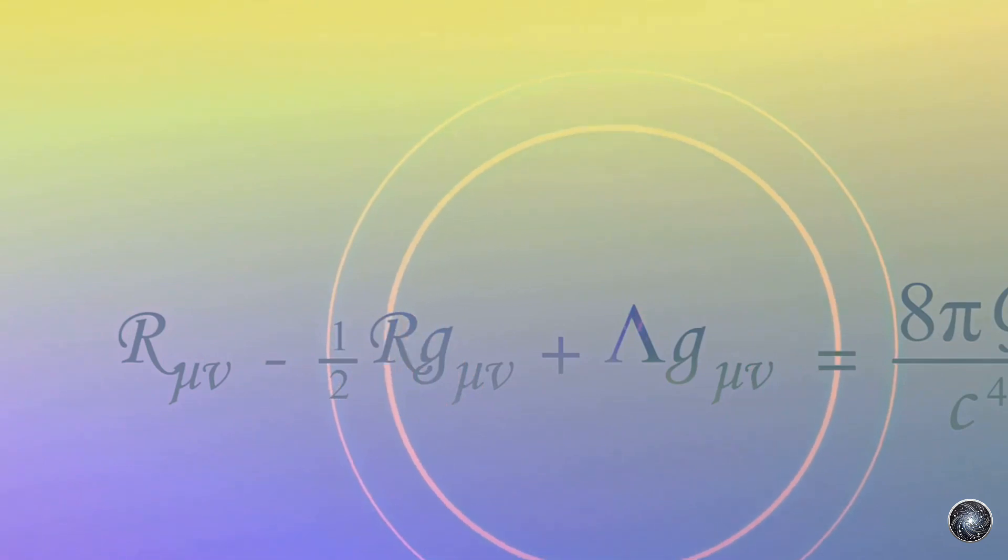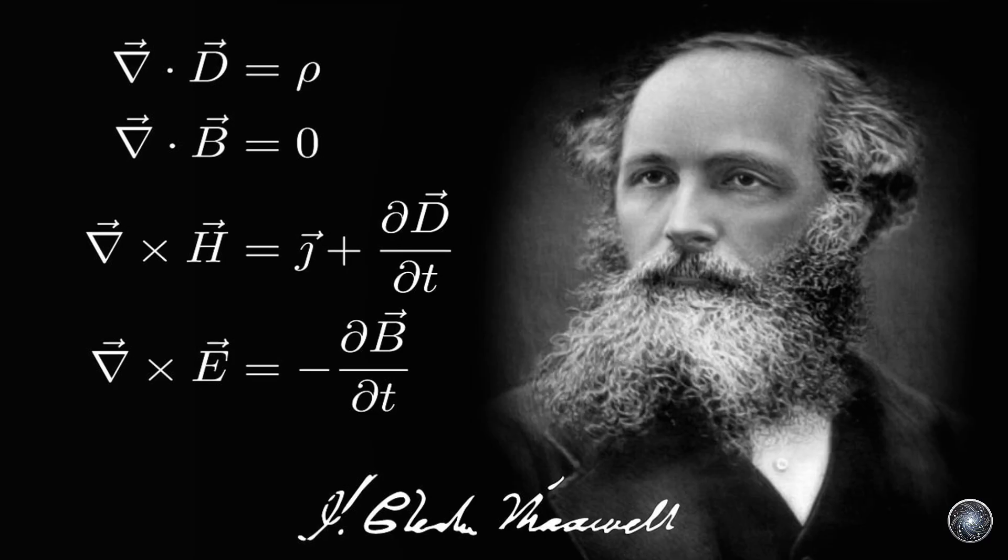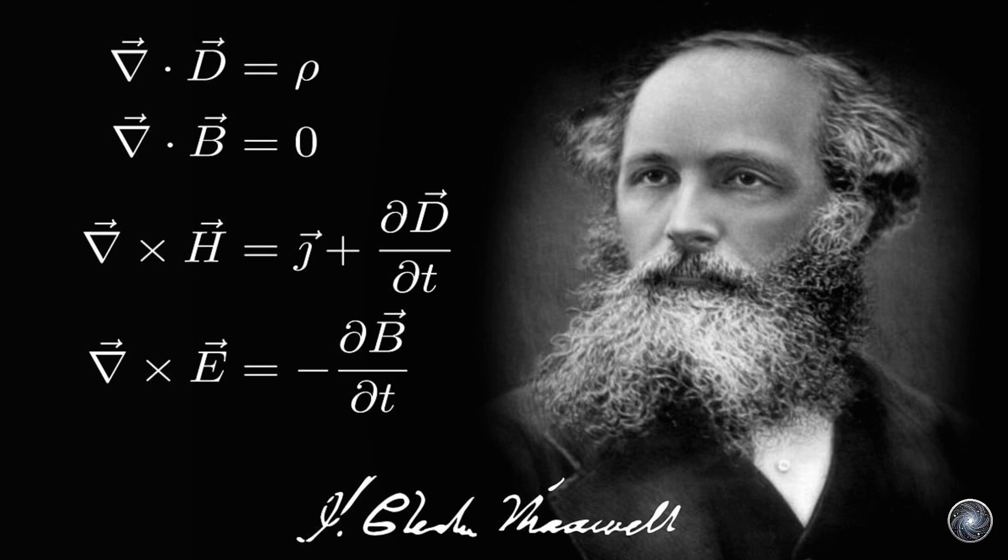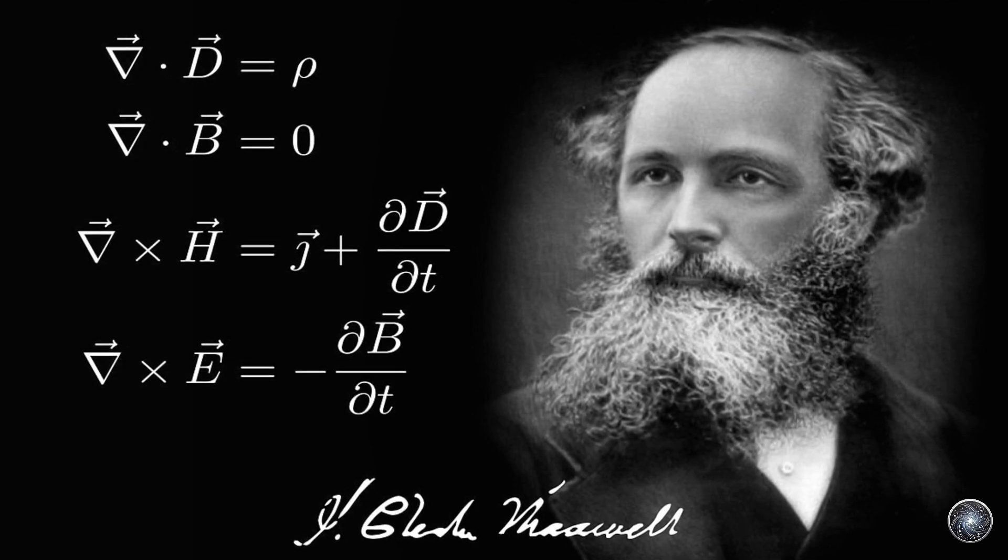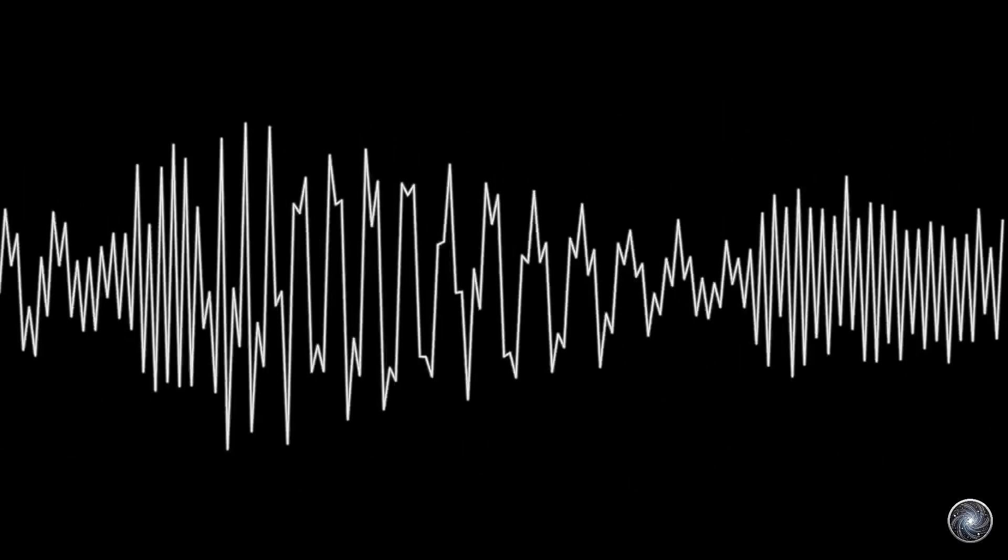From Maxwell to Einstein. James Clerk Maxwell, a Scottish physicist, made groundbreaking contributions to our understanding of electromagnetism in the 19th century. His work unified electricity, magnetism and light into a single theory, known as Maxwell's equations.